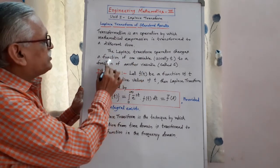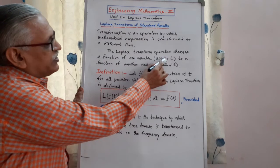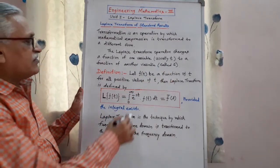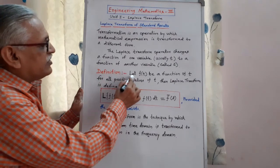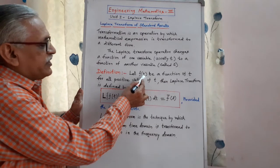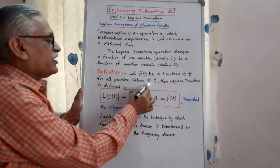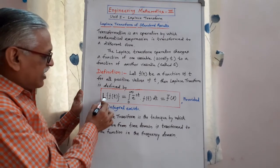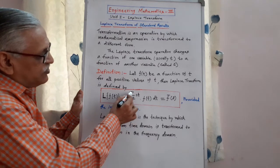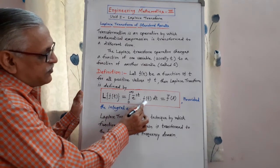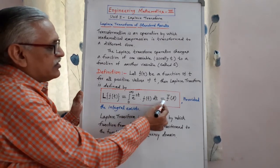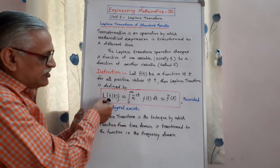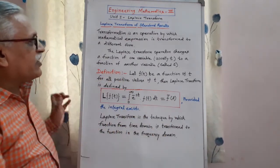The Laplace transform operator changes a function of one variable, usually called t, to another variable called s. For that, we see the definition. Let f of t be a function of variable t for all positive values of t. Then the Laplace transform is defined by: capital L stands for that operator. Laplace of f(t) equals the integral from 0 to infinity of e^(−st) · f(t) dt, and this value is denoted as F-bar of s. Originally it is a function of t, and when operated by this operator, it is converted to a function of s — that is why it is called a transform.